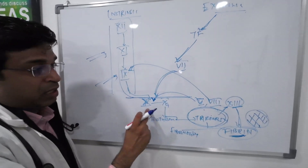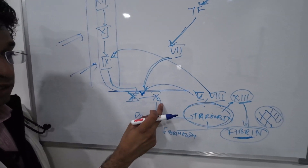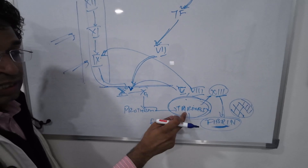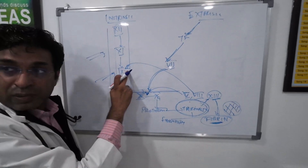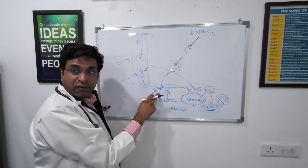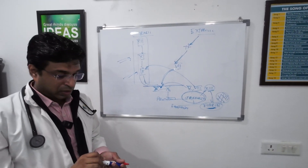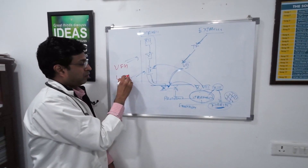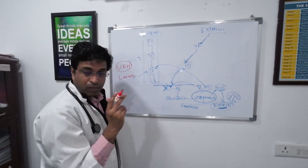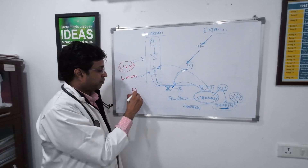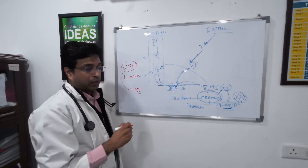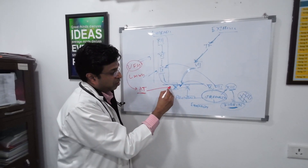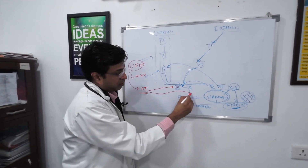To revise: the intrinsic and extrinsic pathways share a common endpoint at factor 10. Factor 10A converts prothrombin to thrombin, and thrombin converts fibrinogen to fibrin. Thrombin also activates factor 8 (important for factor 9) and factor 5 (important for factor 10). Now, unfractionated heparin works via antithrombin — it activates antithrombin, which then blocks factor 10A and thrombin.